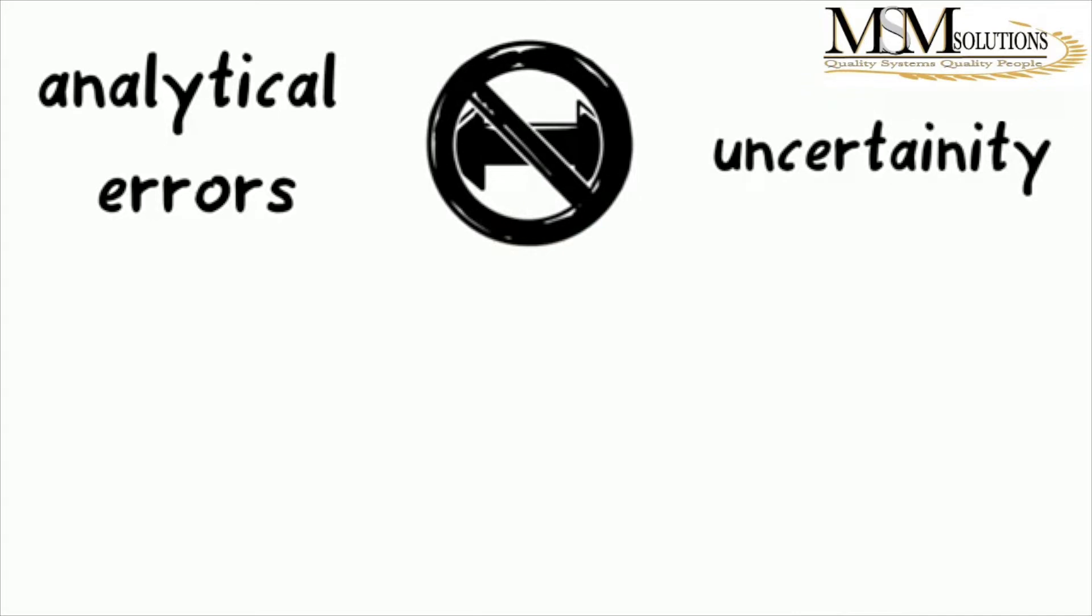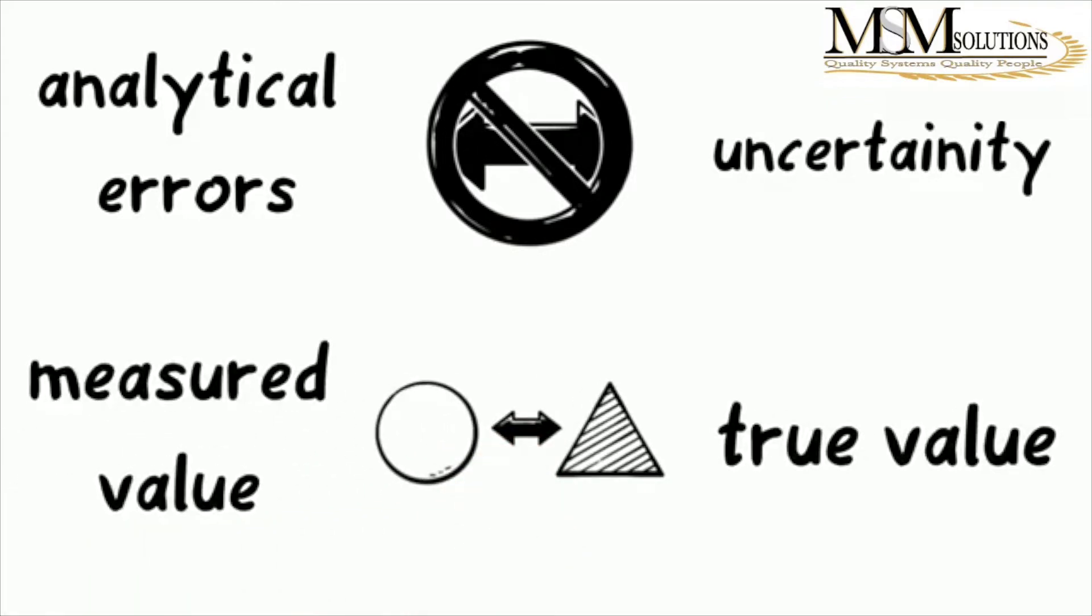So what is the difference between the two? Mainly the difference between an error and an uncertainty. An error means it's the difference between a measured value and a true value. So the variation between what it's supposed to be and what it is, that is seen as an error.